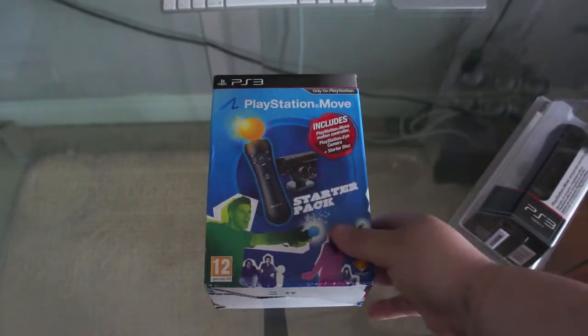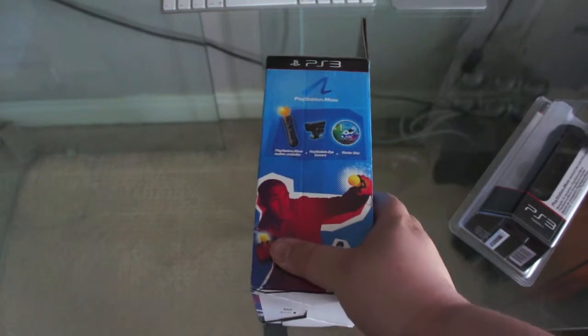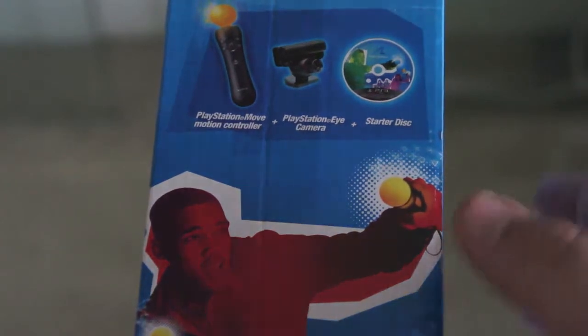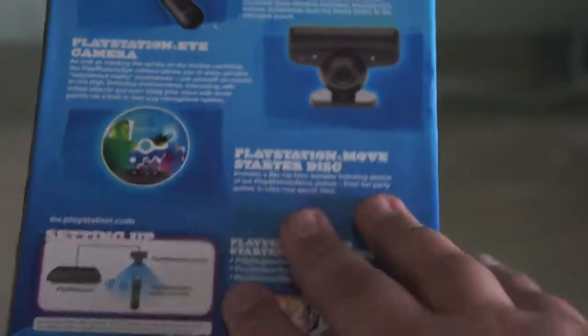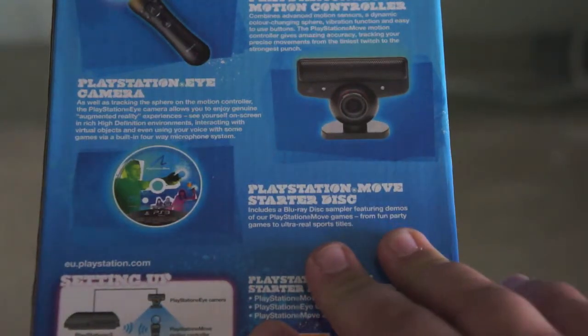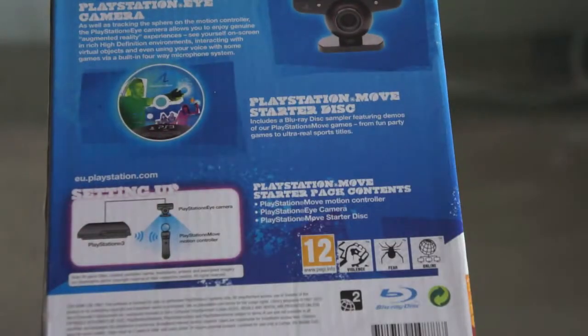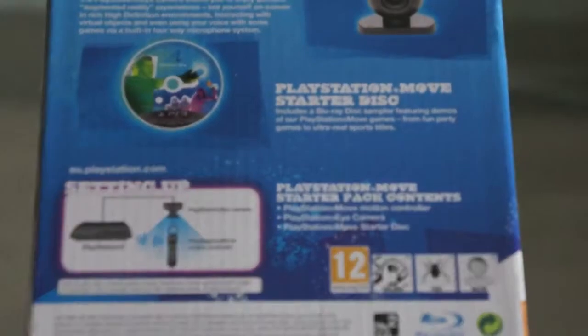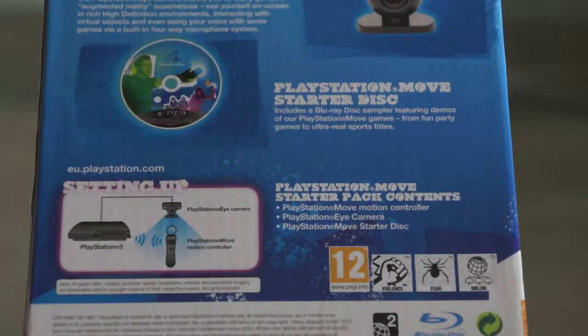On the front of the box, there is a guy playing with the controller itself. On the side of the box, it lists the three accessories that you get: starter disc, camera, and movement controller. On the back, it tells you about it in a little bit more detail. And on the bottom of the device, as you can see, it shows you how to set it up, and it tells you how the interface works.